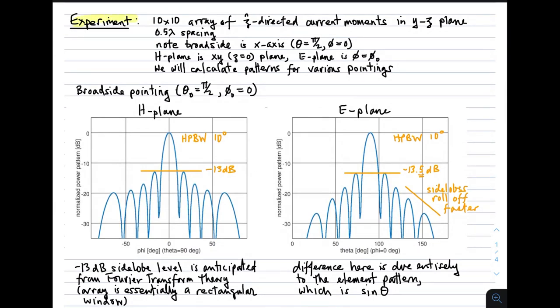Okay, so now an experiment to demonstrate this. We have a 10 by 10 array of z-hat directed current moments in the yz plane, which means we have 100 elements or 100 current moments, 0.5 wavelength spacing, which is a common value to choose, but certainly not exclusive. Note that broadside to the array is the x-axis, the plus x-axis, so that's theta equals pi over 2, phi equals 0. The h-plane is then the xy-plane, that's z equals 0. And the e-plane is phi equals phi 0. And here we're just going to let phi 0 equal 0 for broadside pointing. So theta nought equals pi over 2, phi nought equals 0.